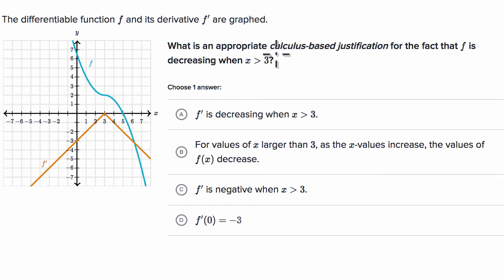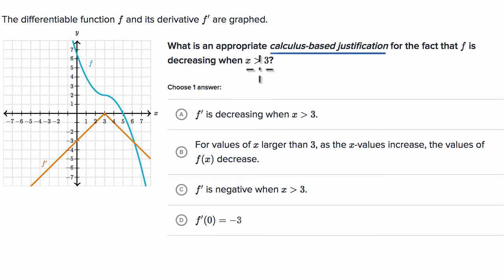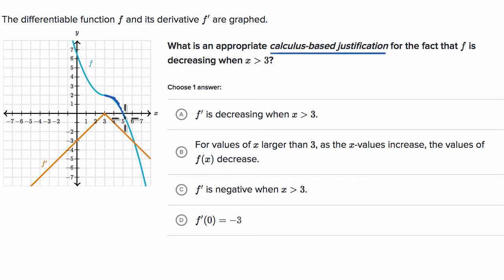What is an appropriate calculus-based justification for the fact that f is decreasing when x is greater than three? We can see that that is indeed the case — when x is greater than three, our function is indeed decreasing.